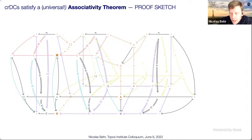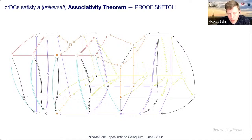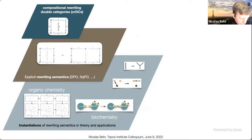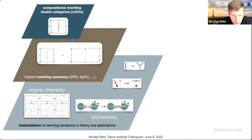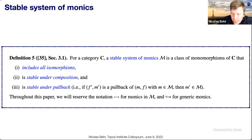I want to conclude by showing how concretely DPO and SqPO rewriting give rise to compositional rewriting double categories, because the main technological advantage is that to show a particular semantics is compositional you only have to go from the second to the first level of the hierarchy. I need a notion of a stable system of monics for modeling matchings. Pushouts and pullbacks are well known; final pullback complements may be less well known.